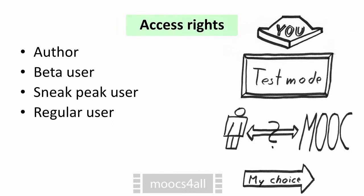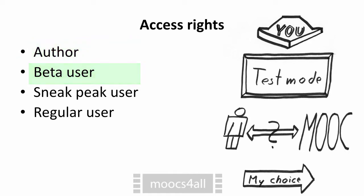One key mechanism the platform provides for handling the course are different access rights. As a creator, you have author rights and are allowed to change nearly everything. The first non-authors to get in are usually beta users who help to smoothen the experience and pave the way to letting regular users into your course. They can as well be sneak peek users who get a glimpse of what is going on inside, in the hope that they will become regular users.